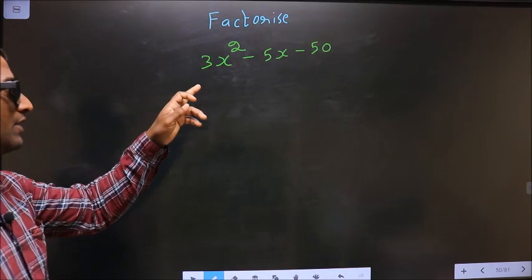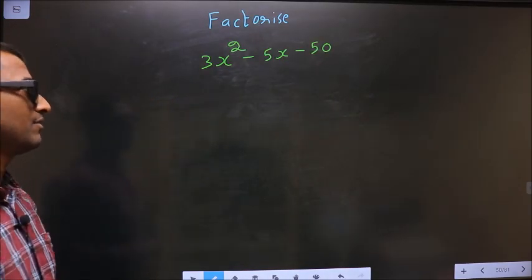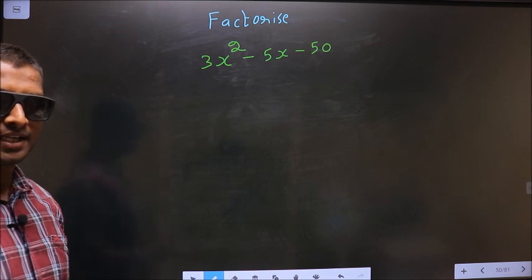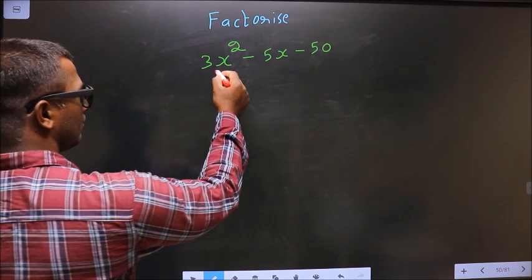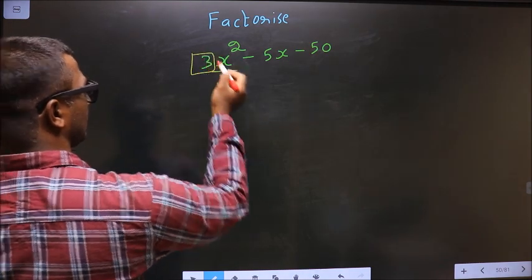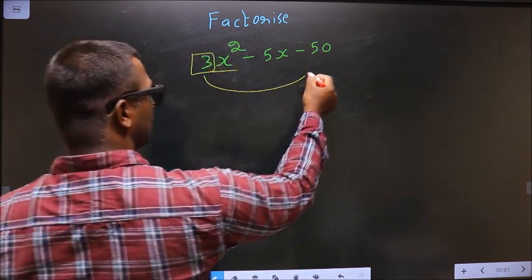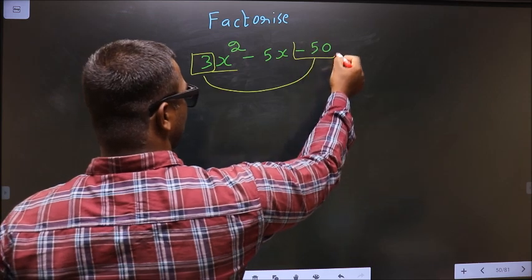Factorize 3x² - 5x - 50. To factorize, step 1: the coefficient of x², which is 3, should be multiplied by the constant, which is -50.